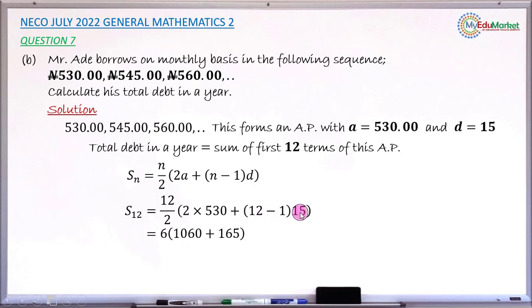That 11 multiplied by 15 is what you have 165 here. So adding 1060 and 165 correctly, you now have 1225.